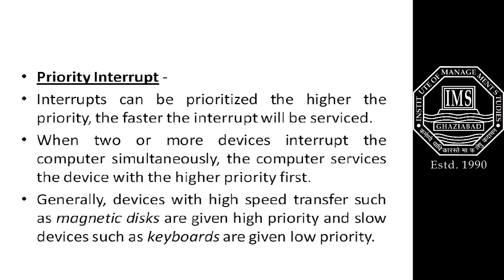Interrupts can be prioritized — the higher the priority, the faster the interrupt will be served. In modern operating systems, priority interrupts are the most commonly used type. When two or more devices interrupt the computer simultaneously, the computer services the device with the higher priority first. Generally, devices with higher data transfer speeds, such as magnetic disks, are given higher priority, while slower devices such as keyboards are given lower priority.